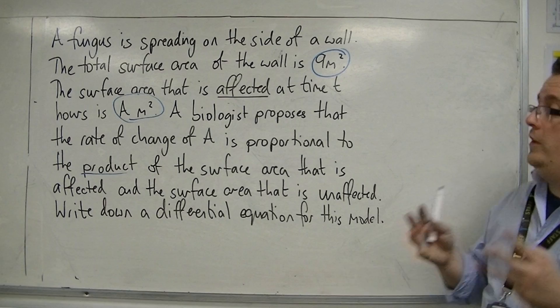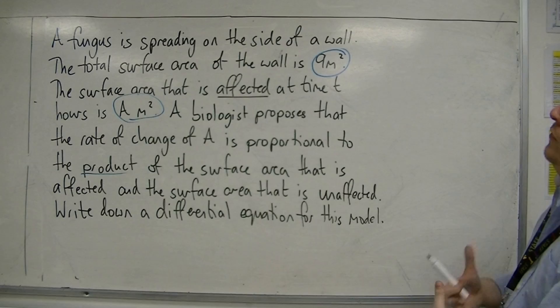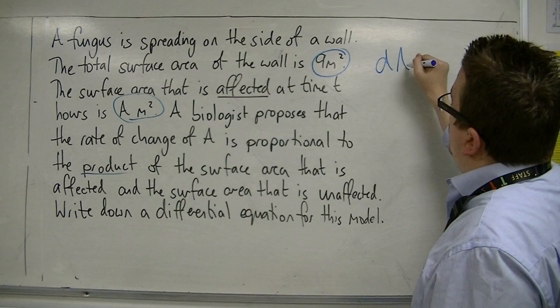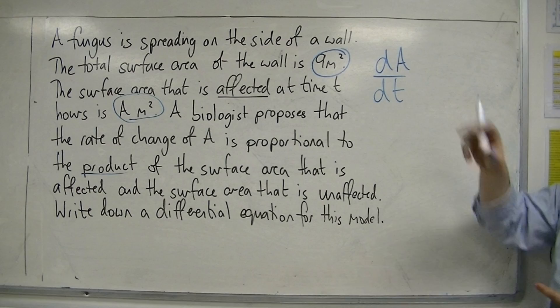So what we're looking at, we want a dy by dx equals kind of scenario, but we're looking here at the rate of change of A, the area, how the area of the fungus spreads, how that changes. So the rate of change of the area is written as dA by dt, A being the area and t being time.